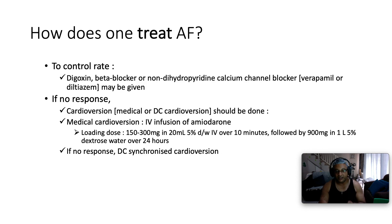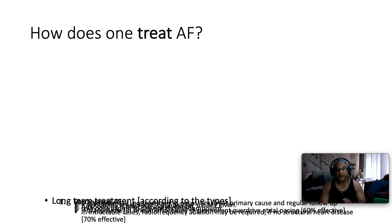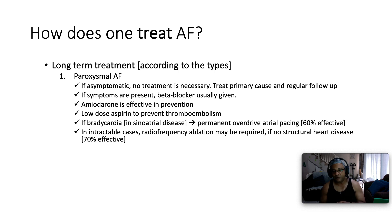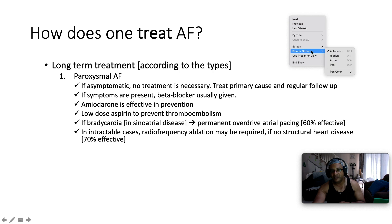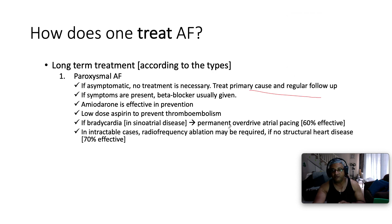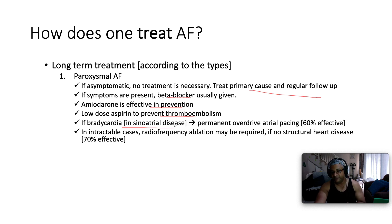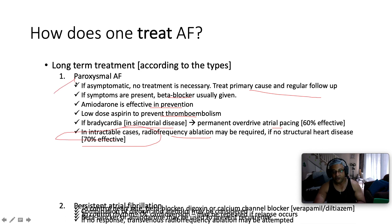In terms of long-term treatment, if it's paroxysmal atrial fibrillation and the patient is asymptomatic, no treatment is necessary — treat the primary cause and follow up regularly. If symptoms are present, a beta blocker is usually given. Amiodarone is effective in prevention. Low-dose aspirin is given to prevent thromboembolism. If the patient is bradycardic due to sinoatrial disease, consider pacing. In intractable cases, radiofrequency ablation may be required provided there's no structural heart disease, with about 70% efficacy in paroxysmal AF.